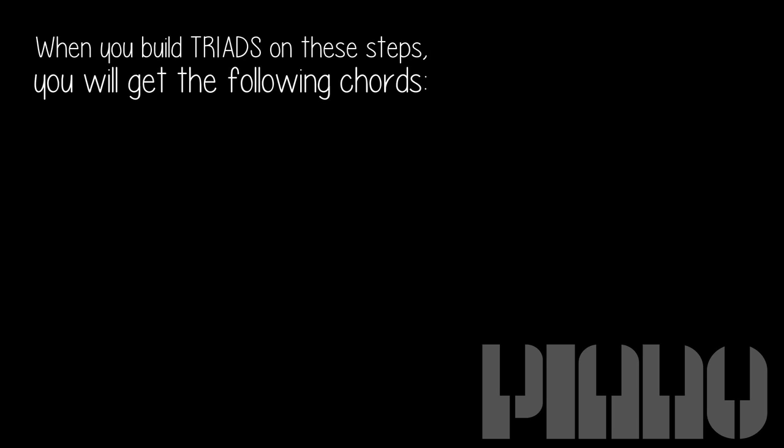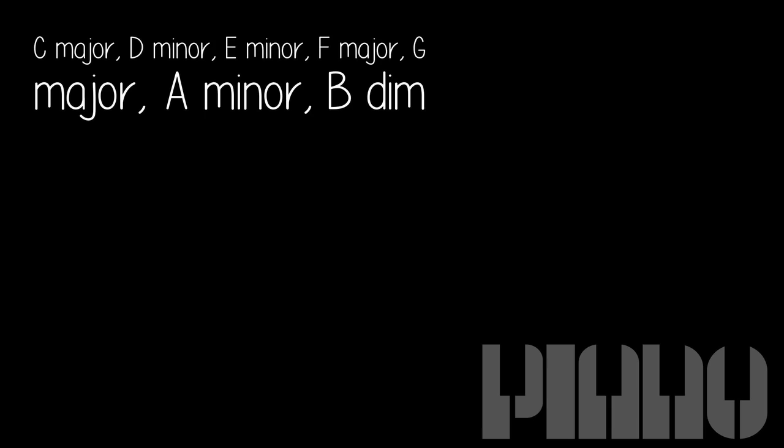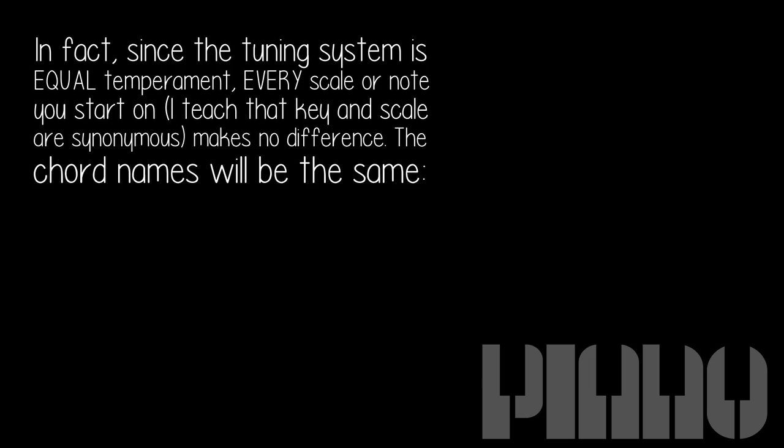When you build triads on these steps, you will get the following chords: C major, D minor, E minor, F major, G major, A minor, B diminished.